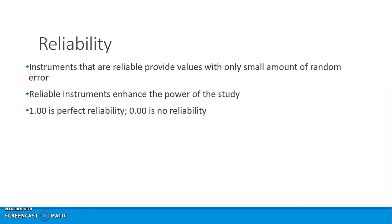Instrument reliability is important. People often look at perfect reliability as being 1.0 and no reliability as zero. Most of the time this is established when we look at internal consistency coefficients, correlation coefficients, and the like.